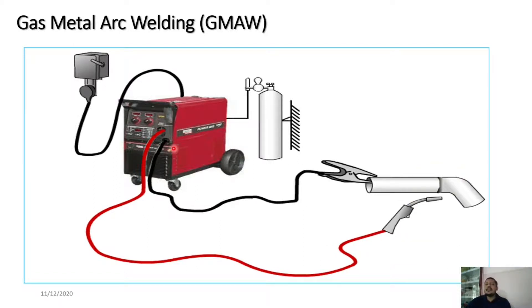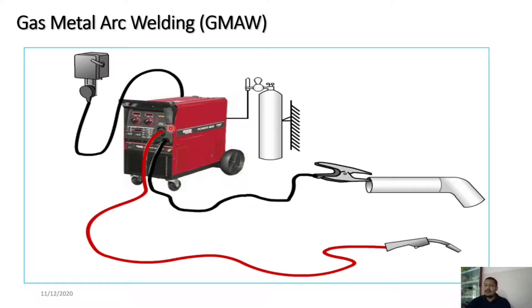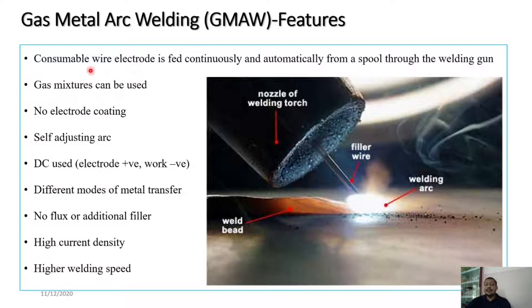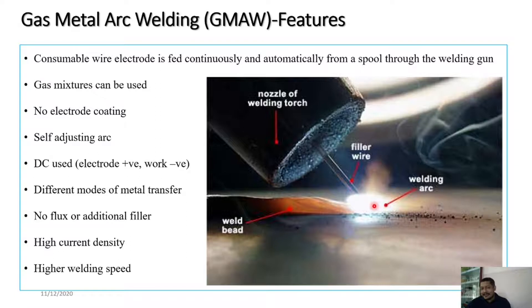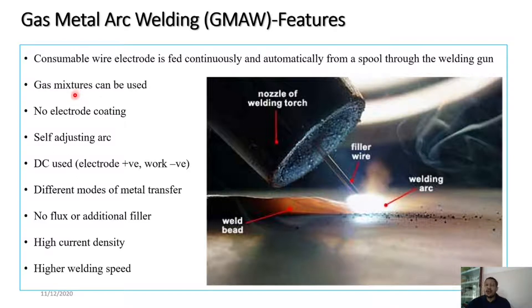The power source used in GMAW is normally of the inverter type. A wire electrode is fed continuously and automatically from a spool through the welding gun. The arc is struck between the positive and negative terminals of the supply, melting the electrode and depositing it into the molten weld puddle. Another advantage is that gas mixtures can be used — shielding gas need not be of a single type; multiple combinations of shielding gas can be provided.